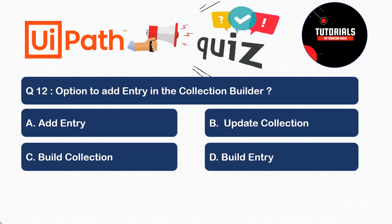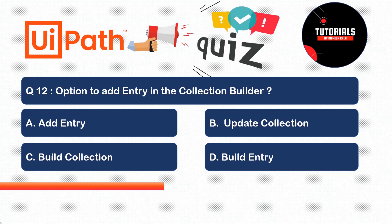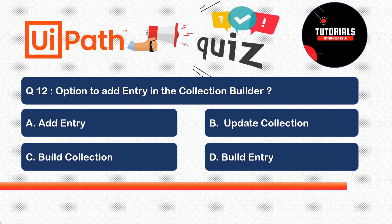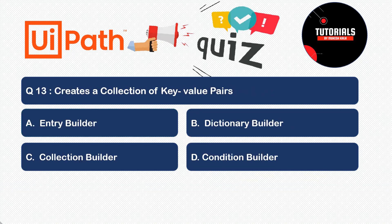Question twelve is about builders. I have to add an entry in a Collection Builder - which option do I use? Is it (a) Add Entry, (b) Update, (c) Build Collection, or (d) Build Entry? The correct answer is Add Entry. Collection Builder is a builder available in this new update that allows you to add, remove, and manipulate collections, and the option to add an entry is called Add Entry.